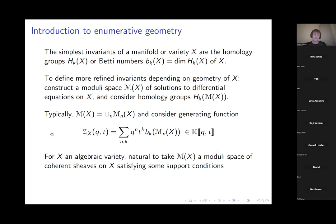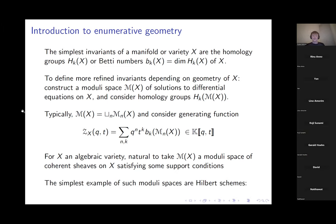When X is an algebraic variety, one natural source of moduli spaces are spaces of coherent sheaves on X, where you might ask for some support conditions — compactly supported sheaves, or sheaves supported along some sub-variety of dimension one or two. Today I want to explain one of the simplest families of such moduli spaces, which are spaces called Hilbert schemes.